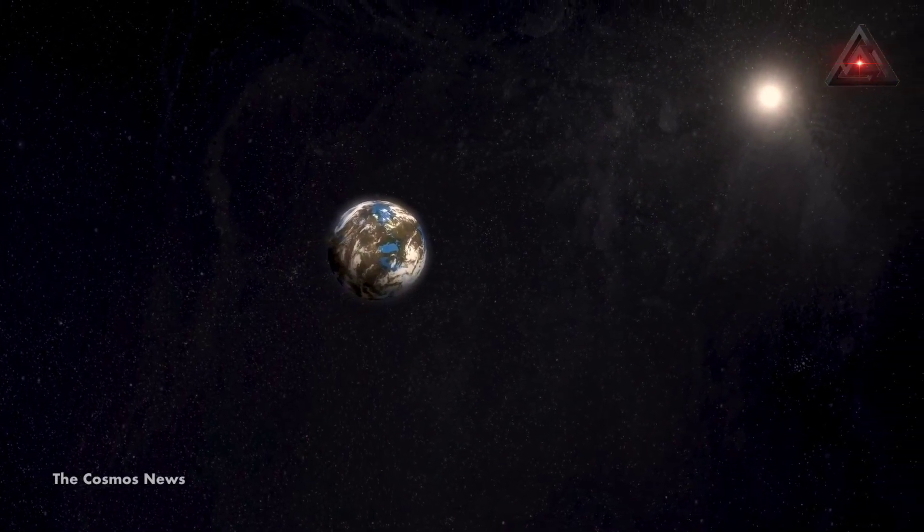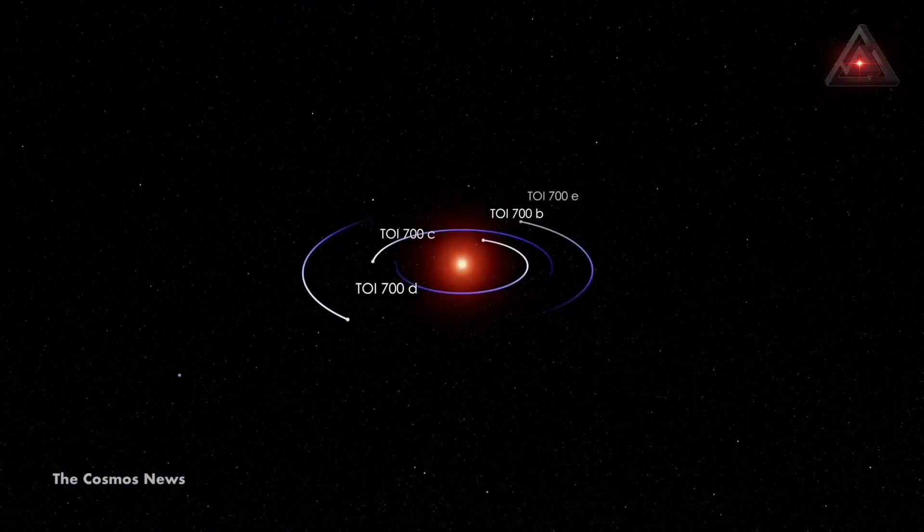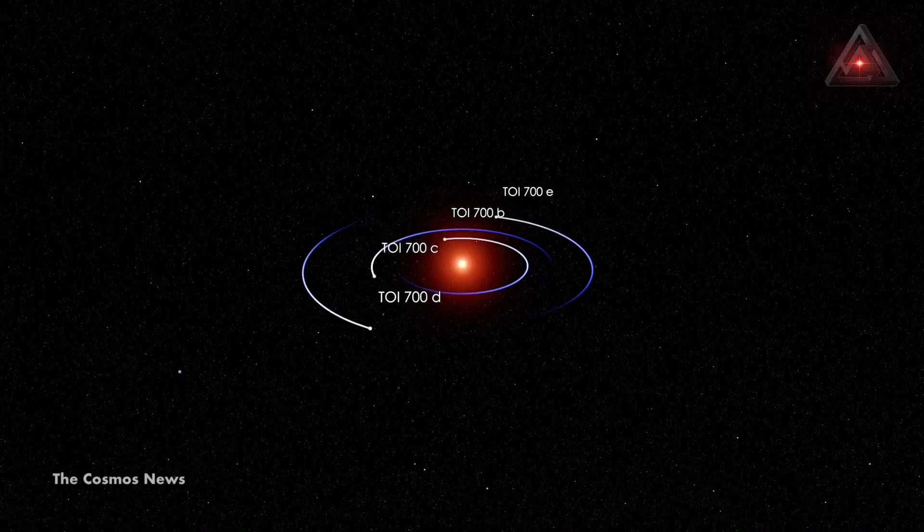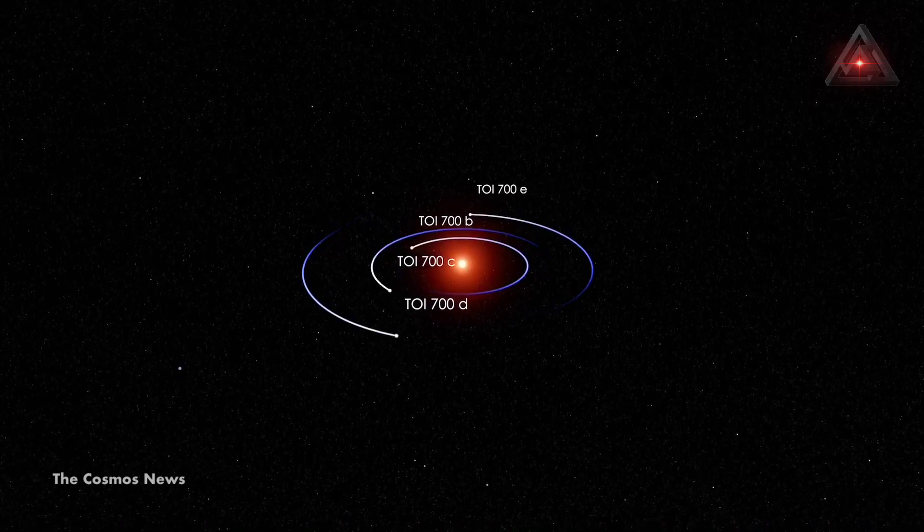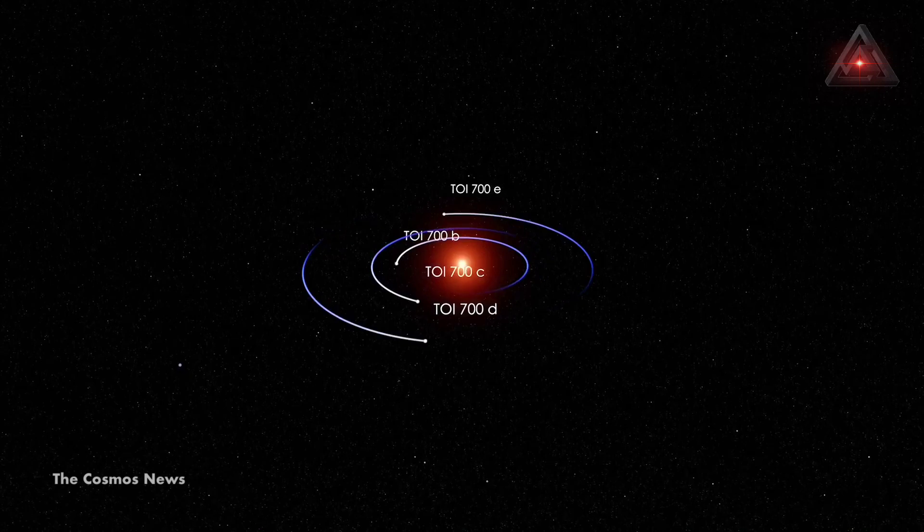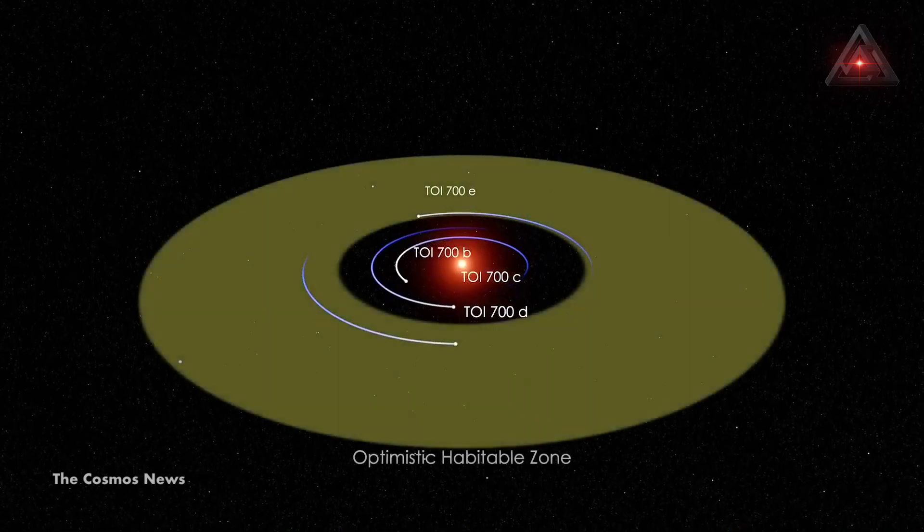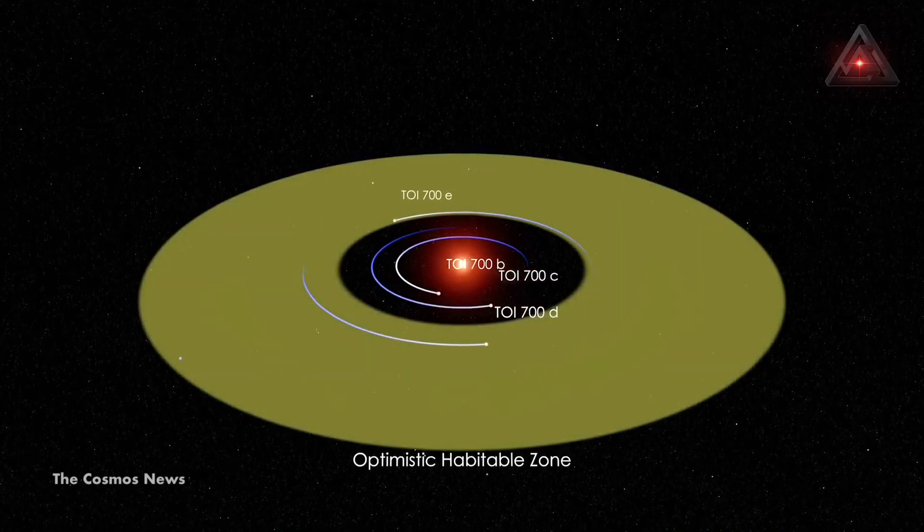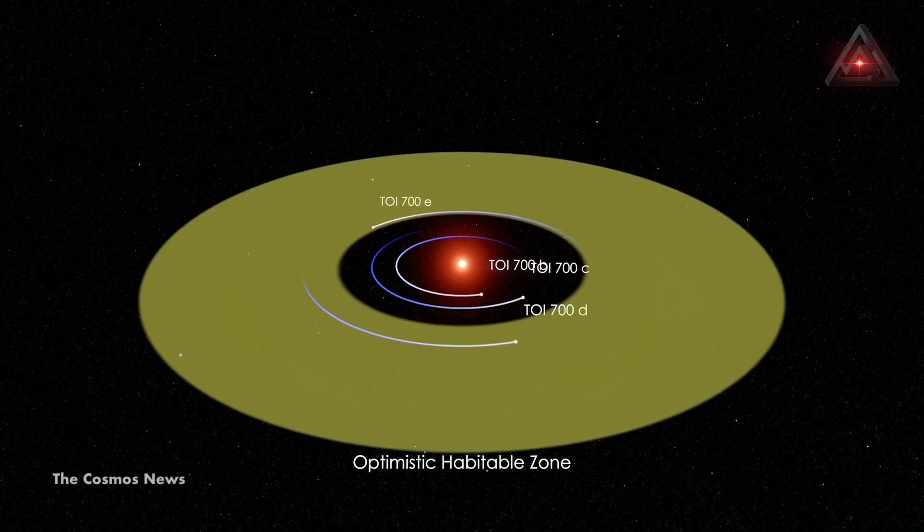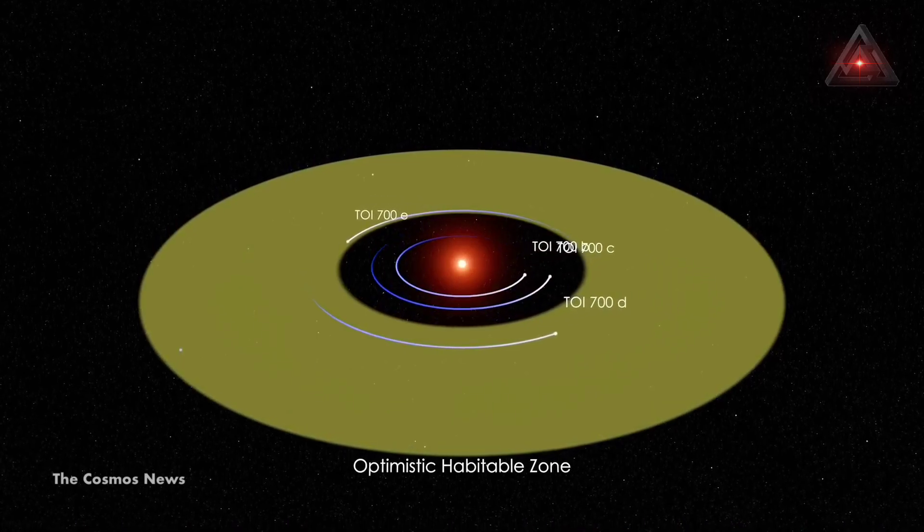The closest to the star is TOI-700b, which is 90% of Earth's size and completes one rapid orbit around the star every 10 Earth days. Then there's TOI-700c, which is 2.5 times bigger than our planet and finishes one orbit around the star every 16 days.